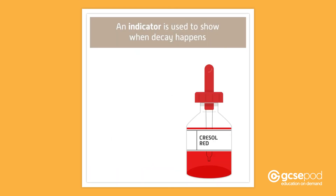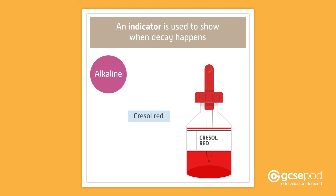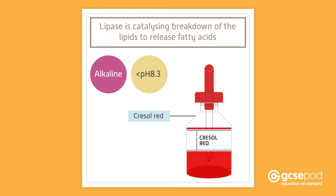An indicator called Cresol red is used to show when decay happens. This indicator is purple in alkaline solutions and then turns yellow when the pH drops below 8.3. The indicator will change colour because the lipase is catalyzing the breakdown of the lipids in the milk to release fatty acids.